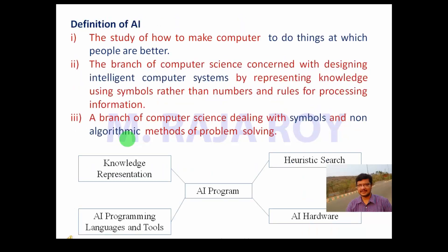Definition of AI: The study of how to make computers do things at which people are better. The branch of computer science concerned with designing intelligent computer systems by representing knowledge using symbols rather than numbers and rules for processing information. A branch of computer science dealing with symbols and non-algorithmic methods of problem solving.